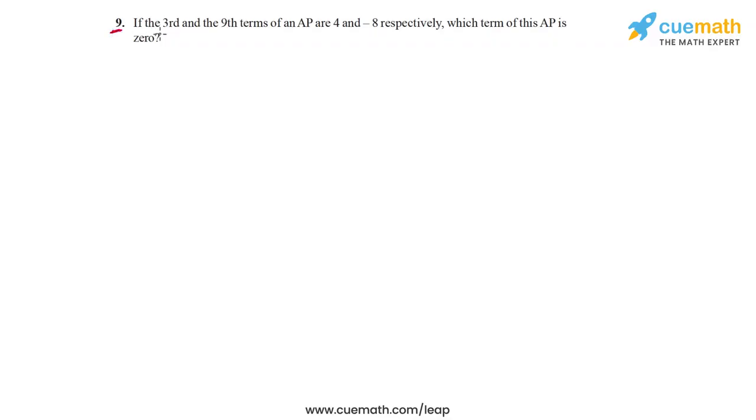The problem statement in question 9 is as follows. If the third and the ninth terms of an AP are 4 and minus 8 respectively, which term of this AP is 0?